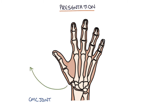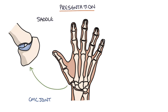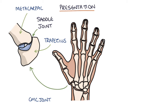The carpometacarpal joint at the base of the thumb is a saddle joint, with the metacarpal bone of the thumb sitting on the trapezius bone like a saddle. It gets a lot of use from day-to-day activities, making it very prone to wear and tear during complex movements. This is why the CMC joint is a key joint that suffers with osteoarthritis in people who use their hands a lot.